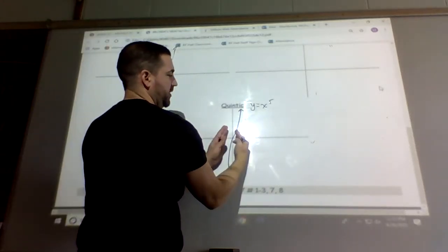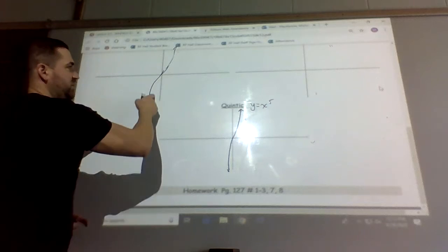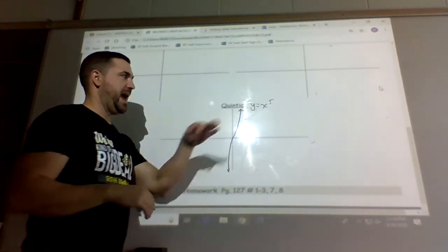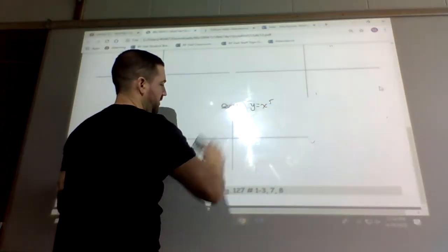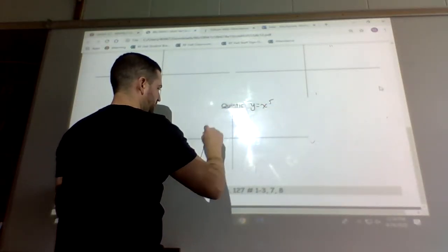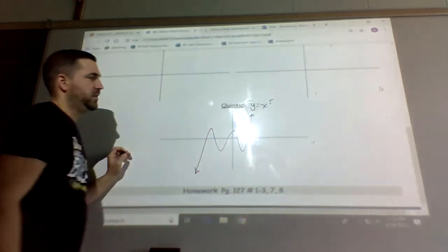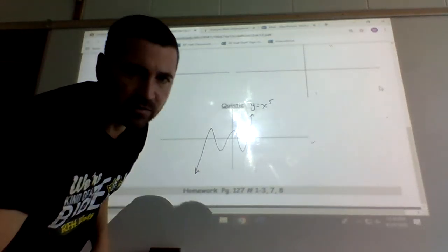This one would be a little bit more thinner because it is growing rapidly because of the power of 5 as opposed to the power of 3. But once again, if we add more terms to the equation, then we could get something that looks something like this. It kind of looks like a snake. I don't know if you guys could see that with the glare.